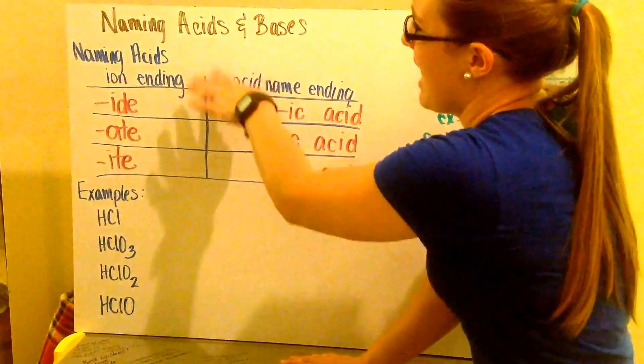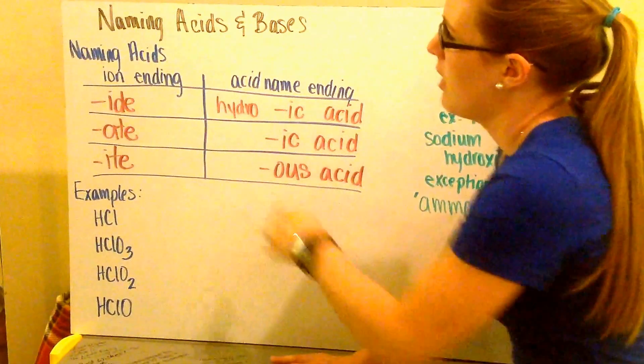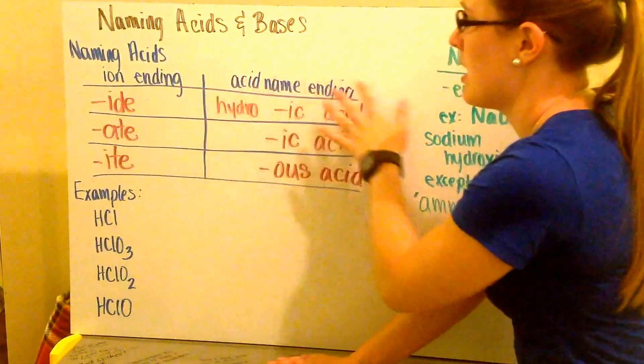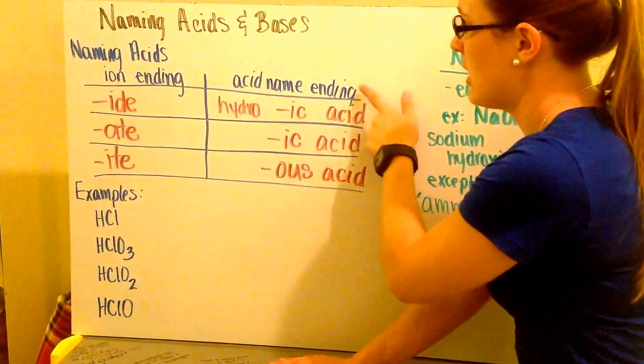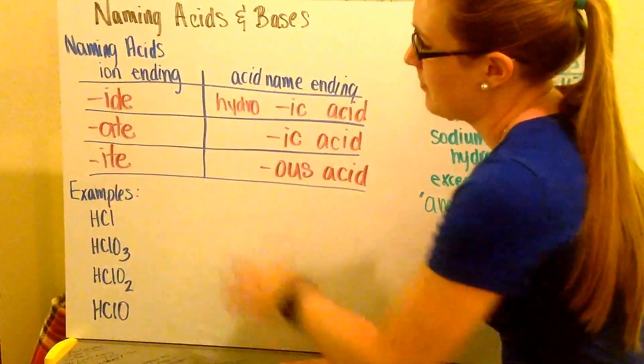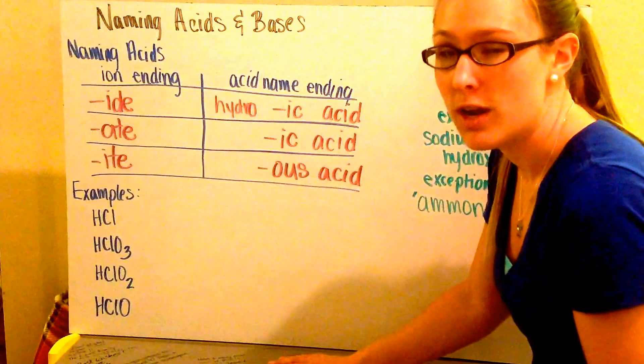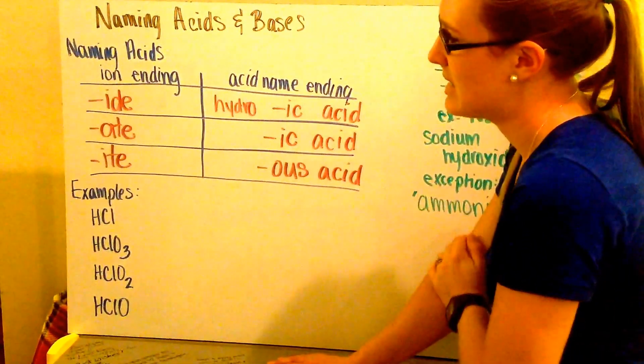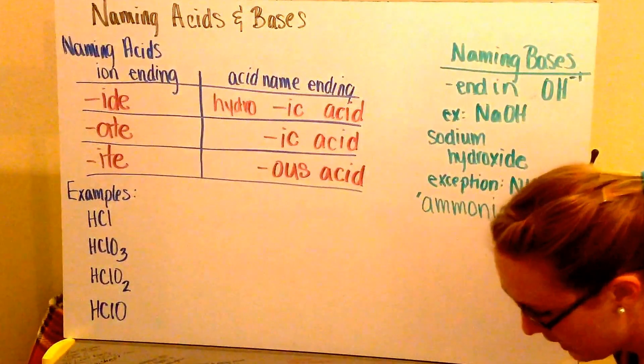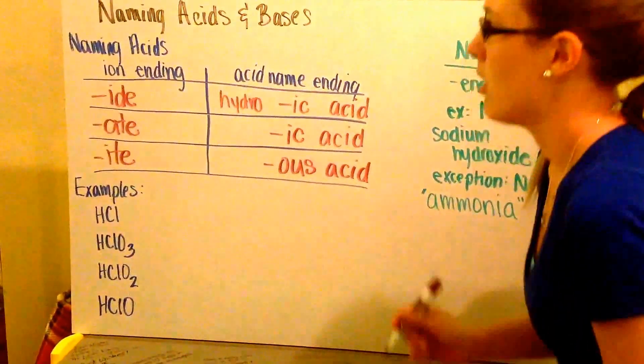But we need to know how to name our acids. They're the ones that are a little tricky. They have a formula we need to follow. We have our ion ending and with that ion ending we get our acid name from that, and our acid names all have endings based on their ion ending. And so we look at the anions because all of our acids are going to have H for hydrogen in front of them. That makes it an acid. Then we look at what anion it's paired with and then depending on how we name that anion, that's how we'll name our acid.